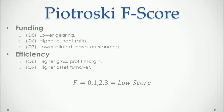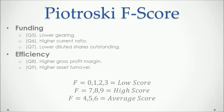Finally, we get the F-score by adding all the zeros and ones. If the total is from zero to three, it's considered a low score. If it is seven, eight, or nine, it's a high score. And if it's four, five, or six, then we have an average score in Piotrowski's F-score terms.